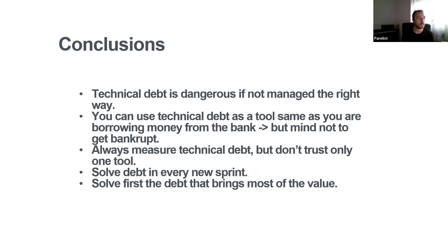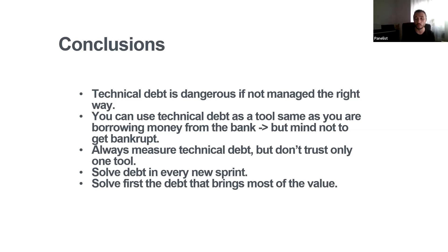In conclusion: technical debt is dangerous, but only if it's not managed the right way. There is always technical debt, and you can use it as a tool to improve the profitability of your software instead of always thinking of it as an illness. It's like borrowing money from the bank — you borrow time. Always measure technical debt but never use only one tool, and use all tools in the right way. Always solve debt in every sprint; remember that postponing debt makes it even more expensive afterwards. Don't forget urgency and importance — always solve the most important first and maintain a good priority system on your board.